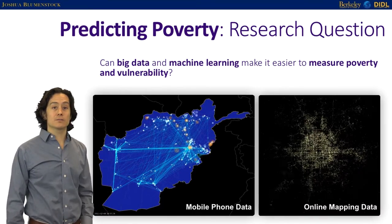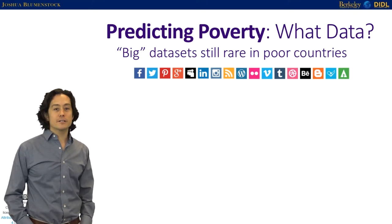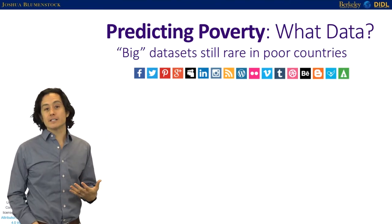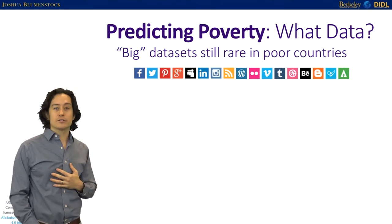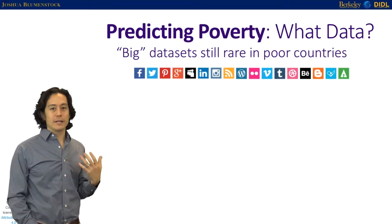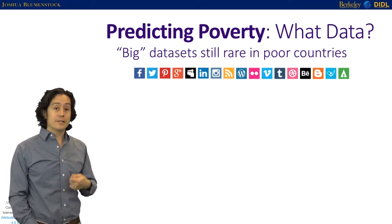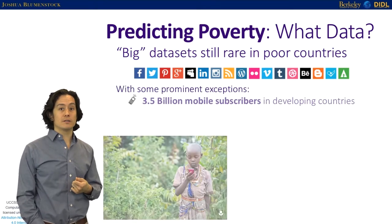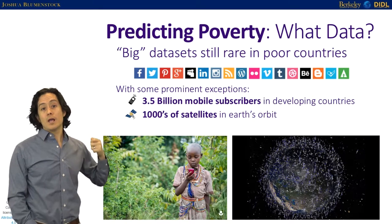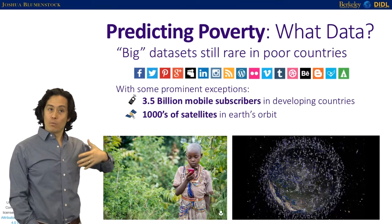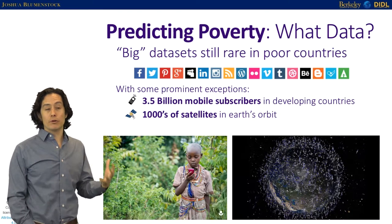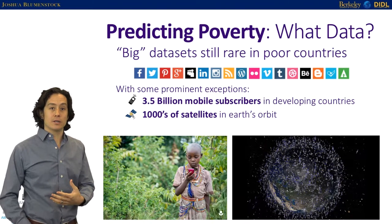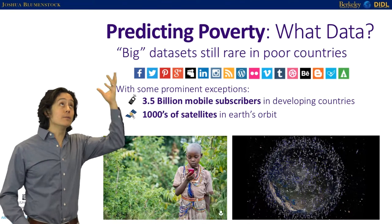What I'm really going to talk about today is Rwanda. Big data is in some sense a first-world problem — Twitter, Facebook, and LinkedIn aren't widely used in developing countries. The data that does exist and that researchers gravitate toward for developing country problems falls into two big exceptions: mobile phones and satellite data. What I'll talk about today is what we can do with terabytes of mobile phone data, though very similar research has shown you can do analogous analysis using petabytes of satellite imagery.